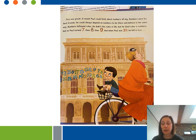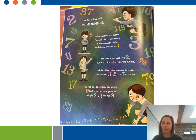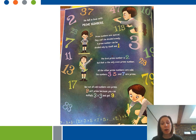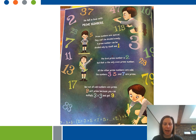Paul turned seven, then eight, then nine, and when he turned ten, he fell in love with prime numbers. Prime numbers are special — they can't be divided evenly. A prime number can only be divided by one and itself. The first prime number is two, and that is the only even prime number. The other prime numbers are odd: three, five, and seven. Not all odd numbers are prime — nine isn't prime because you can multiply three by three to get nine.